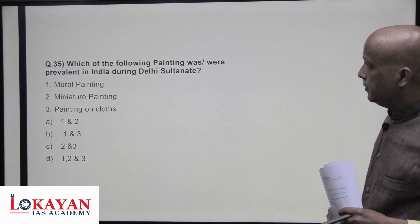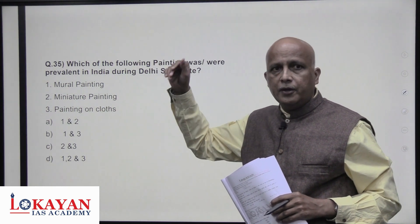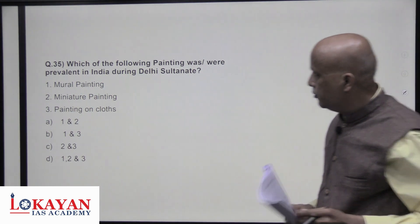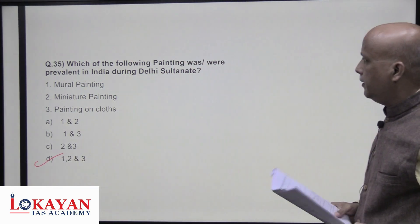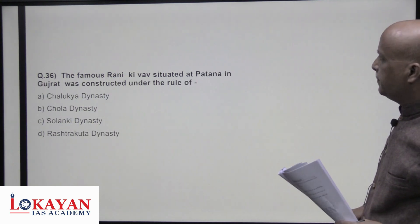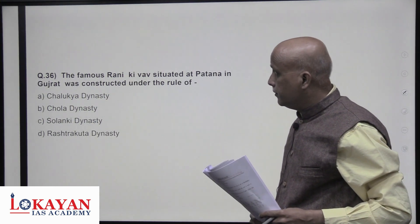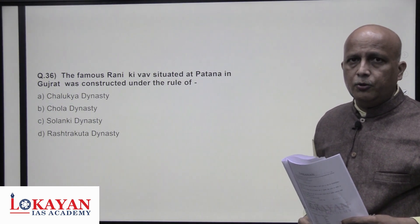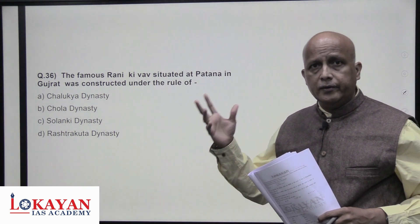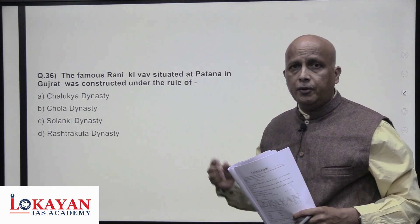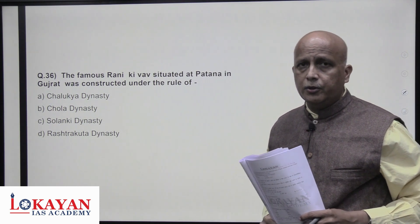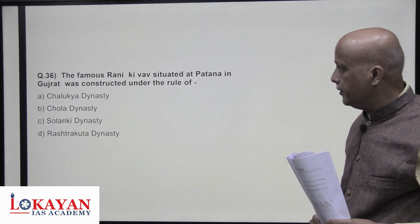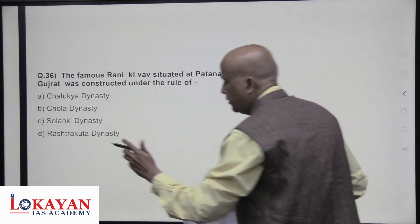Which of the following paintings were prevalent in India during the Delhi Sultanate? Mural painting was there — murals are paintings on walls. Miniature painting also started in this period. Painting on cloth was also practiced. So all three types were prevalent during the Delhi Sultanate. The famous Rani Ki Vav (Queen's Stepwell) in Patan was built by queen Udaymati in memory of her beloved husband — it is a creation of the Chalukya-Solanki rulers of Gujarat and is a World Heritage Site.